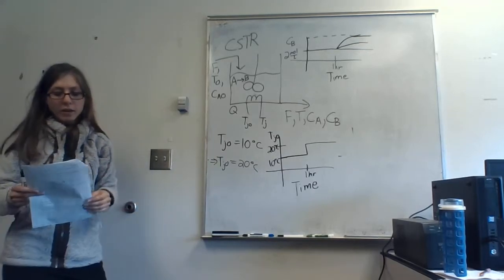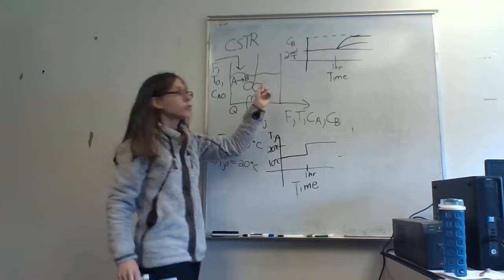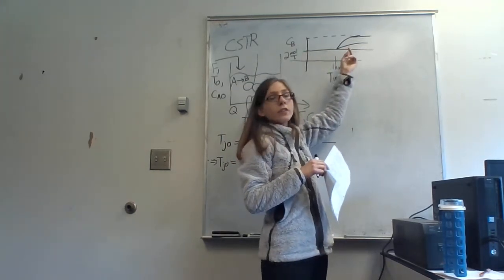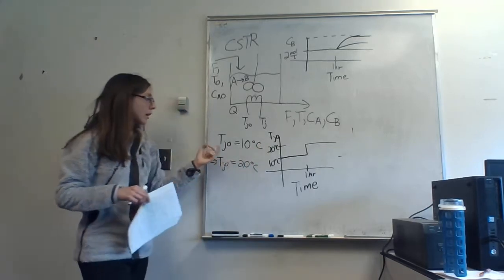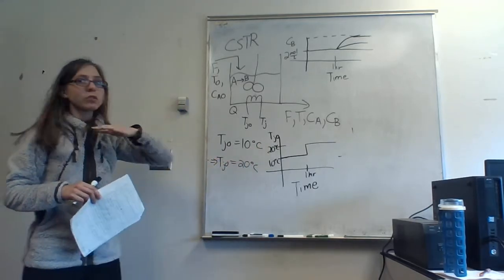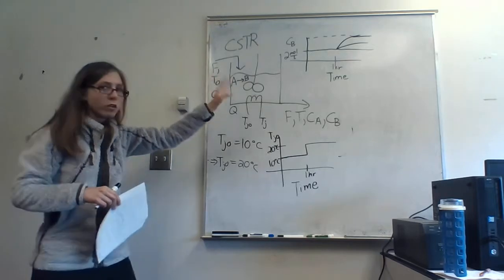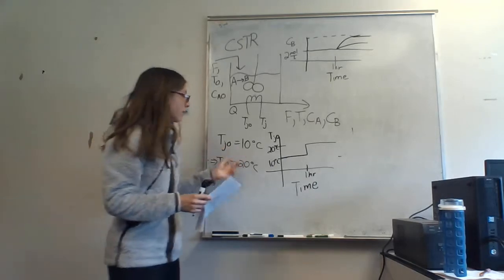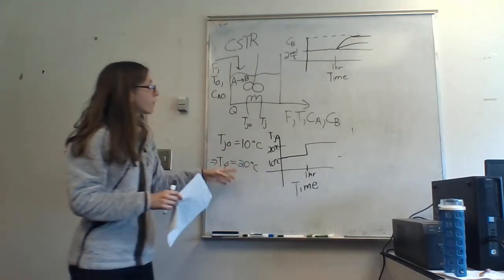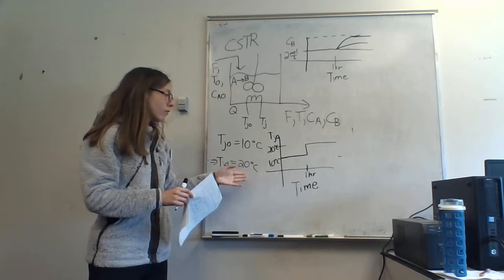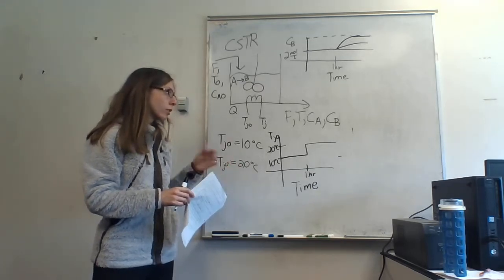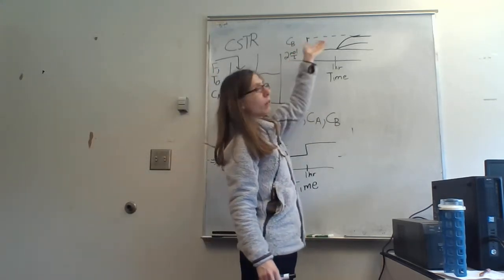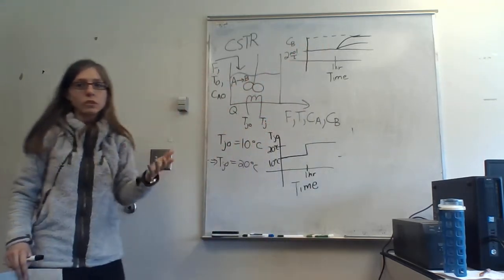That's where we talk about control. This is called a disturbance, and you want to reject the disturbance. Essentially, if you could make it so that there was hardly any change in CB in response to this change in Tj0, that would be disturbance rejection from your controller. Right now without any controller, what's going to happen is CB is ultimately going to go to its new steady state value.